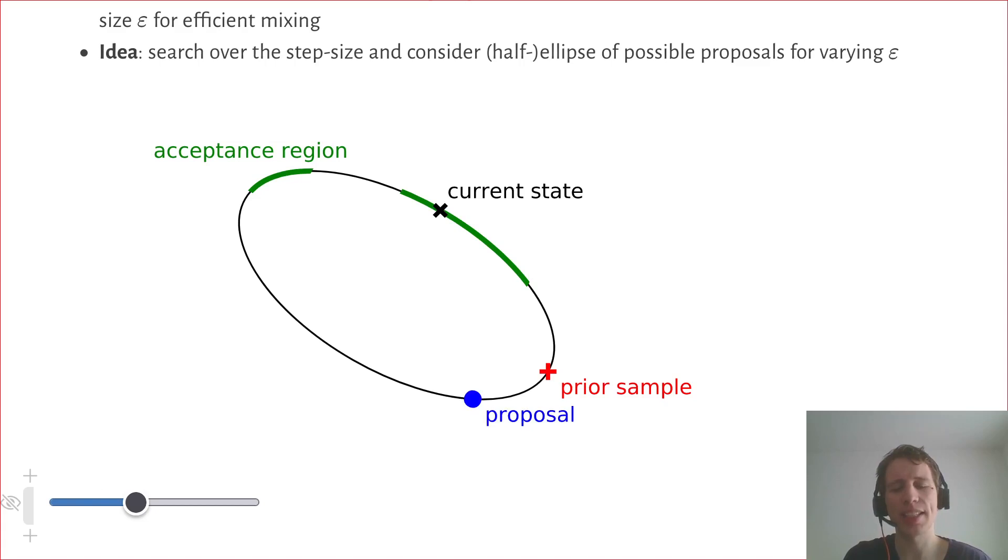And so initially we just sample a proposal uniformly at random at the ellipse. It's not accepted. We draw another sample. It's still not accepted, but now we can shrink the bracket.